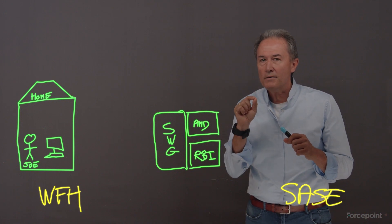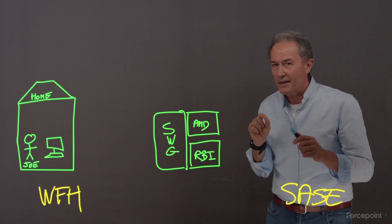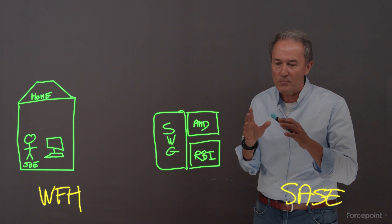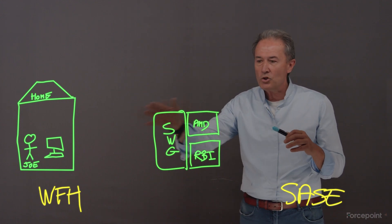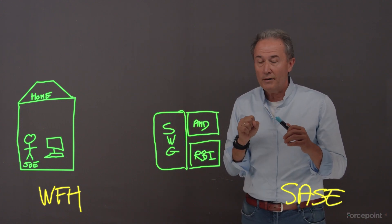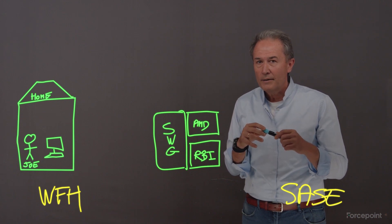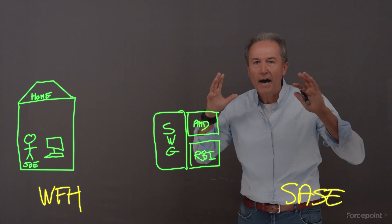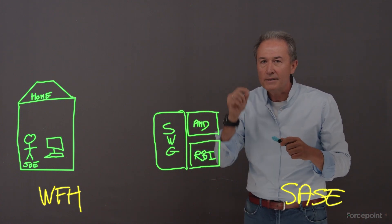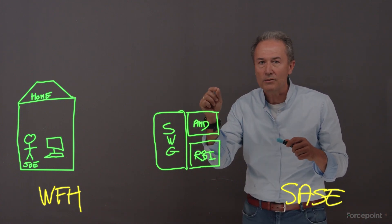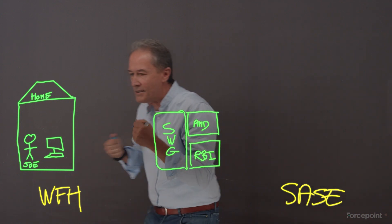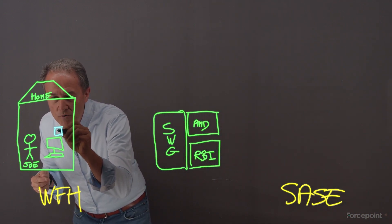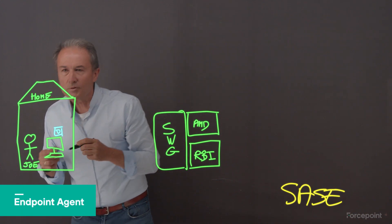The magic word here is 'connect,' and that's something we didn't discuss in the first part — connecting Joe to the software, the secure web gateway in the cloud. This is not about the network; it's not about GRE tunnels or IPsec tunnels. This is about needing an agent to actually steer the traffic from Joe's home using an endpoint.